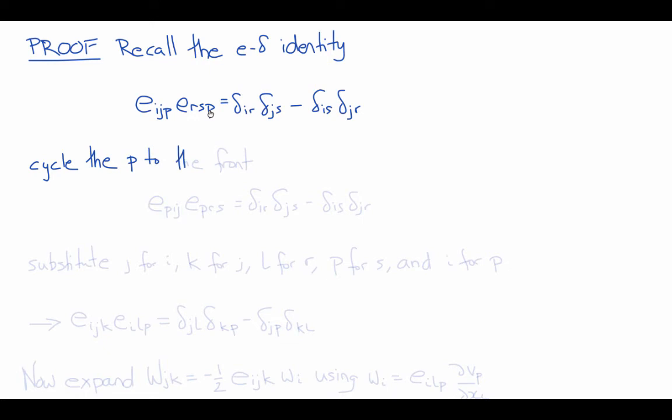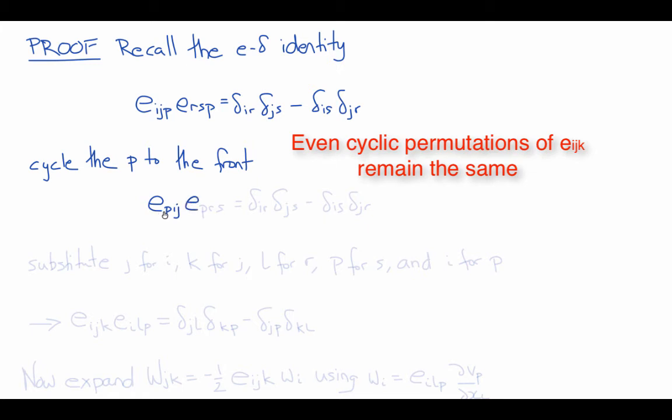We're going to recall that cyclic permutations of e are the same. So if we cycle p to the front of each of these, then we'll get eij times epris must also equal delta ir delta js minus delta is delta jr.